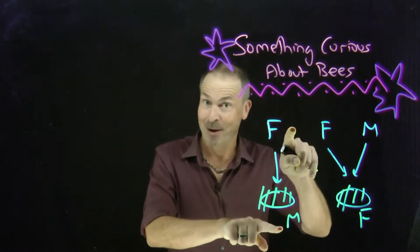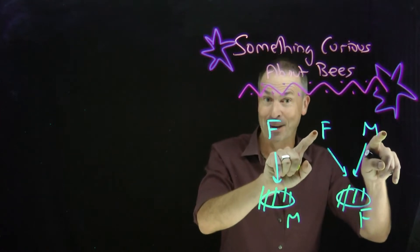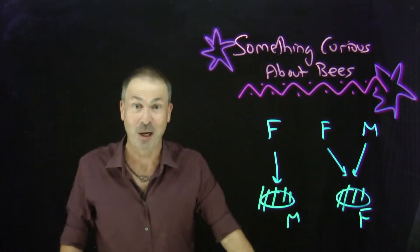So every male bee has just one parent, a female, but every female bee has two parents, a female and a male. Which makes for a very curious family tree of a bee.